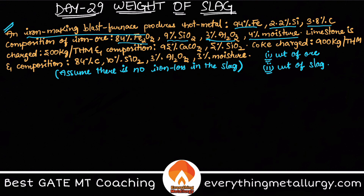The iron ore also has 4% moisture. We also have limestone charged at 500 kg per THM — that means per 1 ton of hot metal produced, you are using 500 kg of limestone. The composition of limestone is 95% CaCO3 and 5% SiO2.